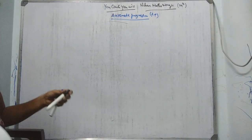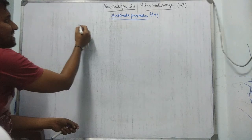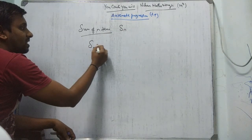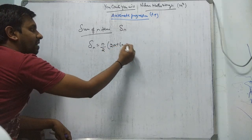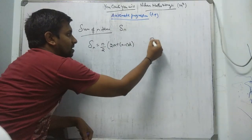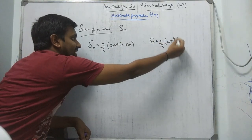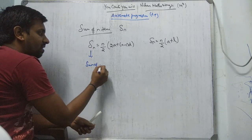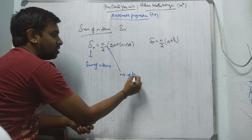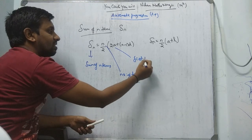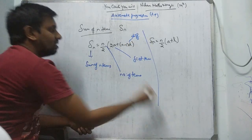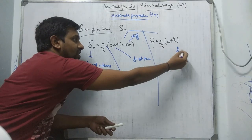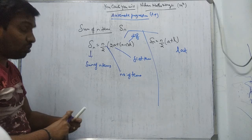Now the sum of N terms formula. SN equals N upon 2 times 2A plus N minus 1 into D. This is one formula. The second formula is SN equals N upon 2 into A plus L. SN is the sum of N terms. N is the number of terms. A is the first term. D is the common difference. L is the last term. There are two formulas — you need to know which to use for which problem.